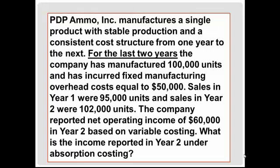The company reported net operating income of $60,000 in year two based on variable costing. What is the income reported in year two under absorption costing? We are focusing on year two, and we have a stable cost structure, so our cost per unit won't change — we won't need FIFO, LIFO, or weighted average. Note that we're not given enough information to compute an entire income statement; we're missing sales price and variable cost per unit. So we focus on what causes the difference between the two methods — hopefully you said fixed overhead.